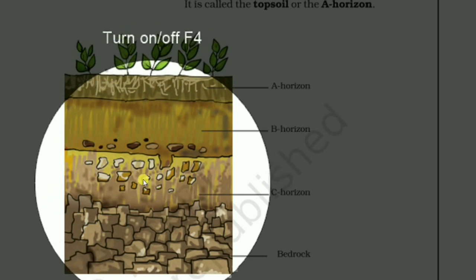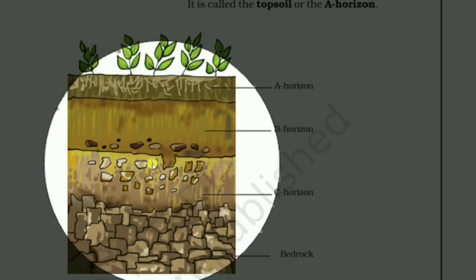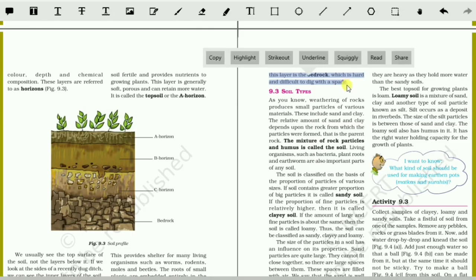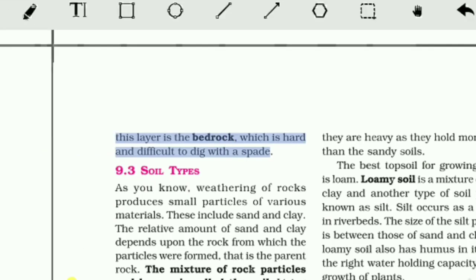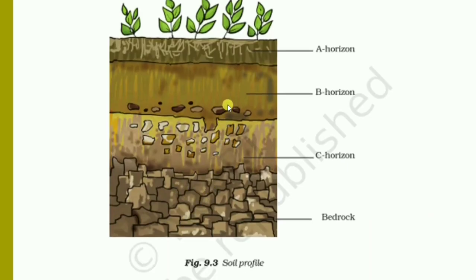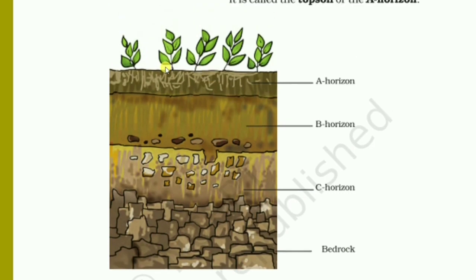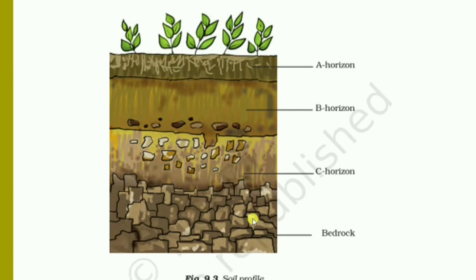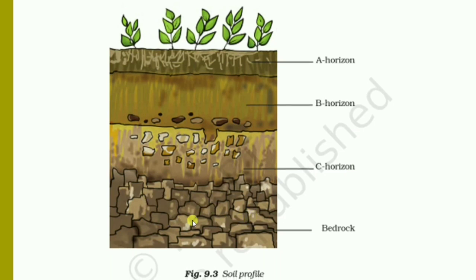The third layer is the C horizon, which is made up of small lumps of rocks with cracks and crevices. Below this layer is the bedrock, which is hard and difficult to dig with a spade. The upper part filled with humus is the A horizon. The particle size at this stage is minute or smaller sized. B horizon particle size is in between A horizon and C horizon. When you go deeper into the soil, the particle size will be bigger and harder. The bedrock is made up of hard rock and very difficult to dig with a spade.